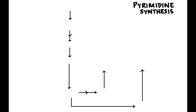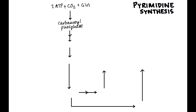So let's go ahead and start out with our pyrimidine synthesis pathway. Our very first step is that we take 2 ATP, CO2, and glutamine, and we convert it to carbamoyl phosphate. The enzyme that we use in the pyrimidine synthesis pathway is called CPS2, carbamoyl phosphate synthase 2.